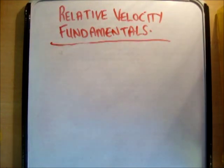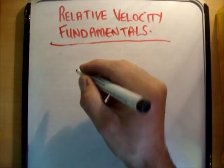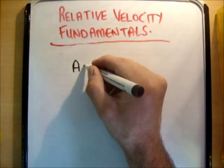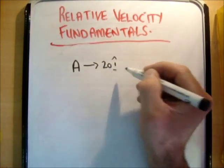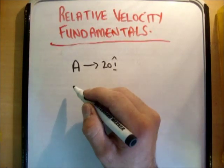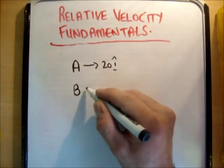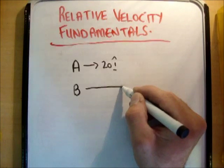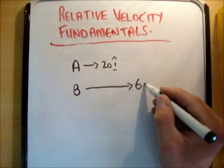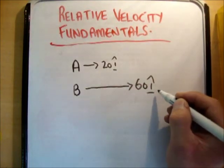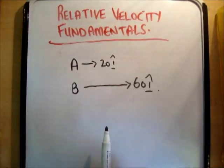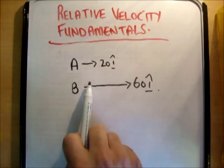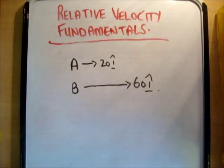I'll show you an example of what relative velocity might mean. If you have car A moving in this direction at 20 i-hat, and you have car B moving in this direction at 60 i-hat, now I'm going to tell you the following: you want to find out how fast car B is moving relative to A, or how much faster B is moving than A.